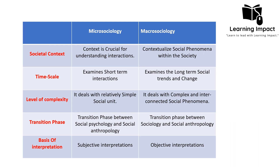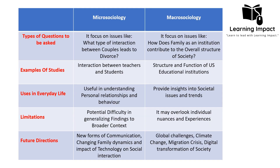Macro sociology is considered the most important field of sociology and also acts as a transition phase. Sociology is the study of society, and social anthropology studies society through a comparative lens. Regarding basis of interpretation, both micro and macro sociology interpret society, but micro sociology's interpretation is more subjective as it is based on personal beliefs, thinking, and feelings. Macro sociology is more objective because it focuses not on individual belief but on external factors and how society is affected by them.